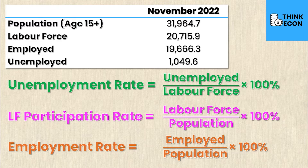It's important to note that the denominator of the unemployment rate is the number of people in the labour force, but the denominator of the employment rate is the total working age population. Therefore, the unemployment rate plus the employment rate will not sum to one — that's an area where a lot of students make mistakes.